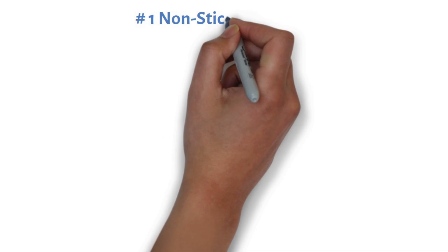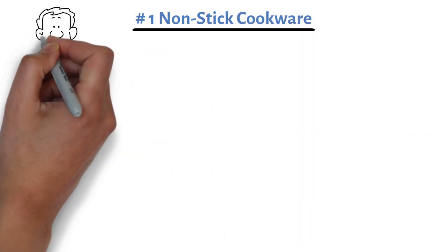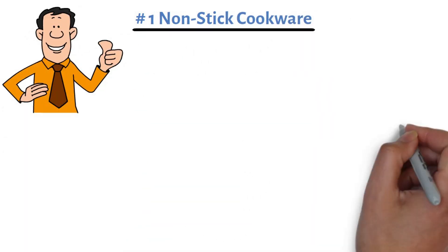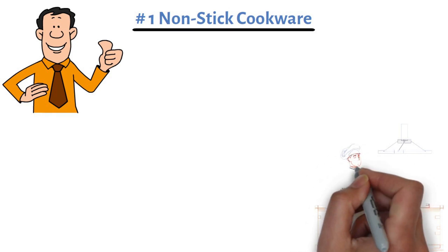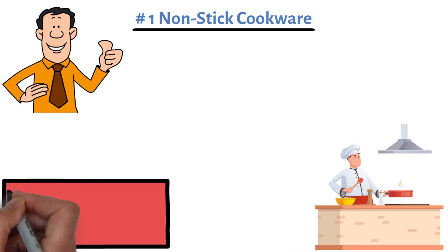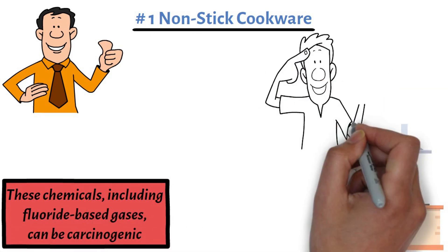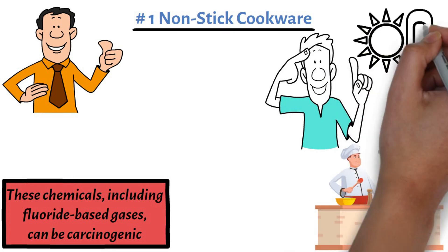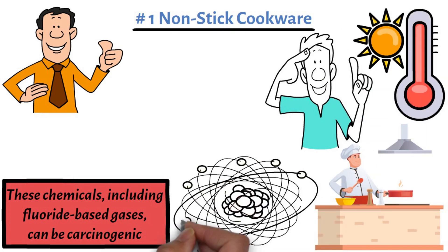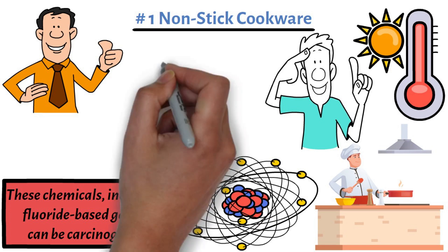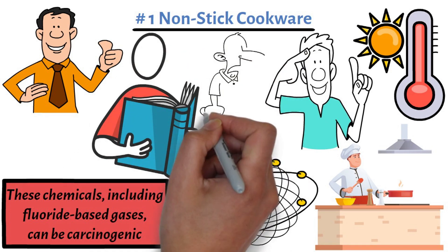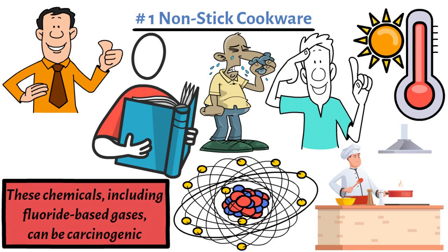Product number one, nonstick cookware. Nonstick cookware is super convenient, but when heated, it can release toxic chemicals into your food. These chemicals, including fluoride-based gases, can be carcinogenic. When nonstick surfaces break down at high temperatures, they release a variety of toxic particles.